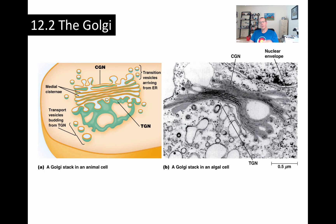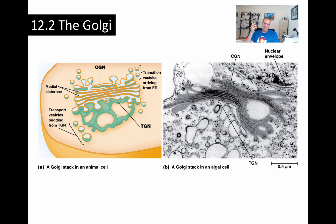One important thing about the Golgi is that it's functionally, and in some cases physically, linked to the ER. The functional link is the most important, and we'll talk about that more when we discuss trafficking and glycosylation. In the Golgi, glycoproteins and membrane lipids coming in from the ER undergo further processing and are sorted for packaging into transport vesicles. The Golgi plays the central role in membrane and protein trafficking in eukaryotic cells — remember, this is an organelle unique to eukaryotic cells.